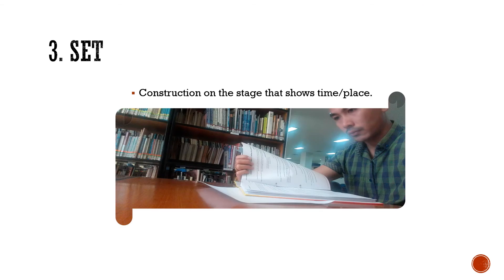Construction on the stage that shows time and place — this is called the set. Set can be like a setting of time or setting of place, but in drama the set is set up on the stage. Jadi misalnya ada panggung namanya set, nanti di panggung itu biasanya di set up — ada tone time setting-nya, ada tone place setting-nya, atau setting tempat dan setting waktunya.